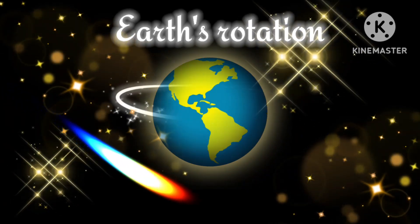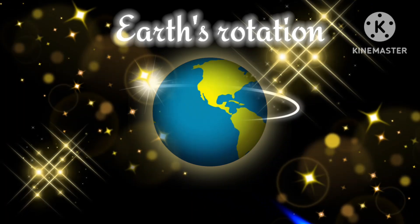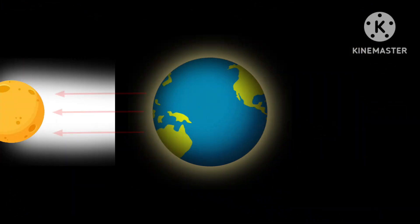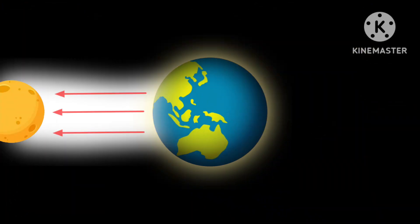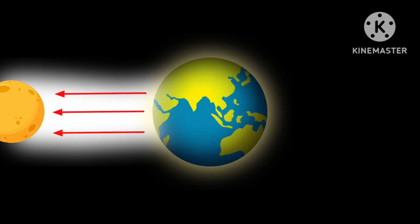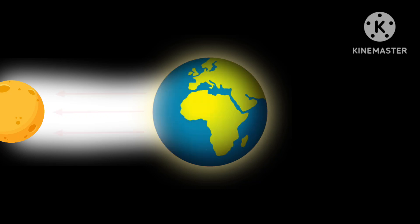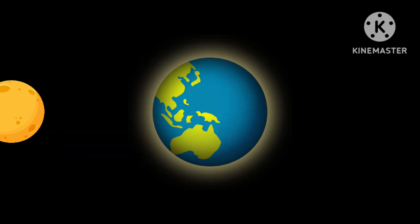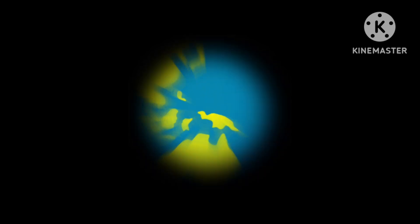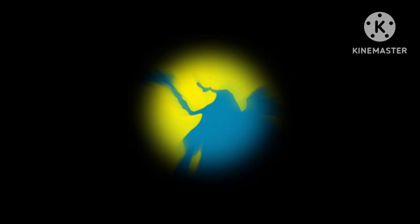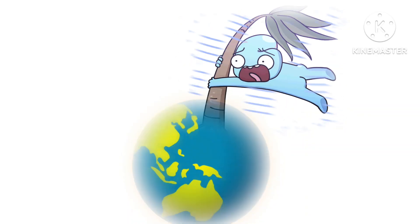It will also impact Earth's rotation. The moon's gravitational pull helps keep Earth's rotation at a stable speed, which currently results in a 24-hour day. Without the moon, Earth would spin about 3-4 times faster, shortening the day to 6-8 hours and causing extremely high winds.